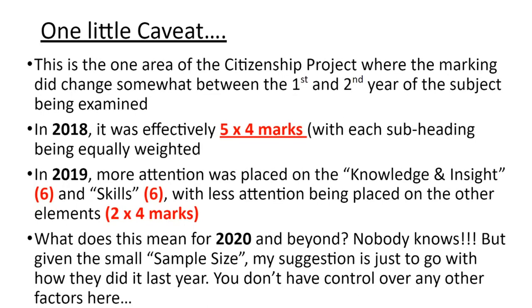One little caveat here: this is the one area of the Citizenship Project where the marks layout actually changed from the first to the second year. Originally it was five subheadings, four marks each. In 2019 they changed it to give greater emphasis to knowledge and insights gained and to skills developed, with six marks each, leaving two clumps of four for the other three subheadings. What does this mean for 2020 and beyond? We just don't know — the Department of Education and the SEC warn that the scheme might not be the same next year, so in the absence of better information, we work on what we had last year.